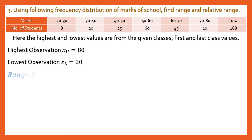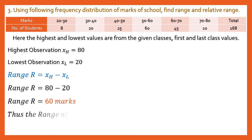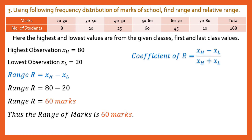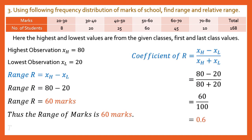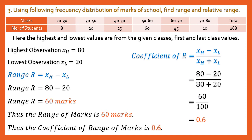We don't need to find mid-values or do any conversions — just look at the data for the highest and lowest. Range = 80 − 20 = 60 marks. Coefficient of range = (80 − 20) / (80 + 20) = 60 / 100 = 0.6. Statement: The coefficient of range of marks is 0.6.